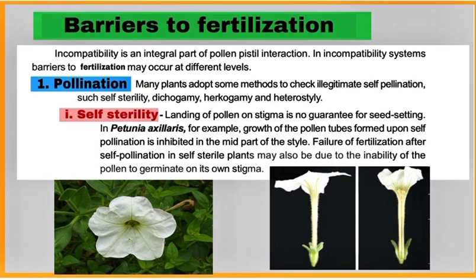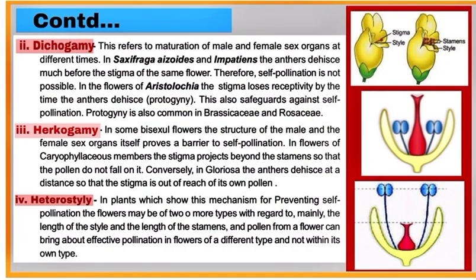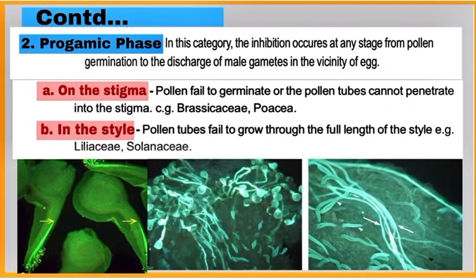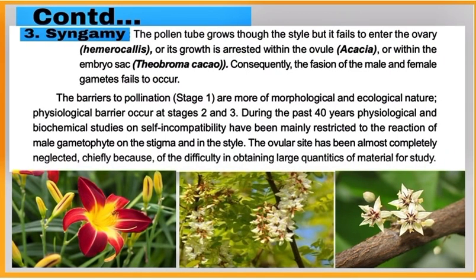Barriers to fertilization may occur at different levels. Number 1: at the pollination level, where plants adopt some methods to check self-pollination, like self-sterility, dichogamy, herkogamy, and heterostyly. Number 2: at the progamy phase, and Number 3: at the syngamy phase.